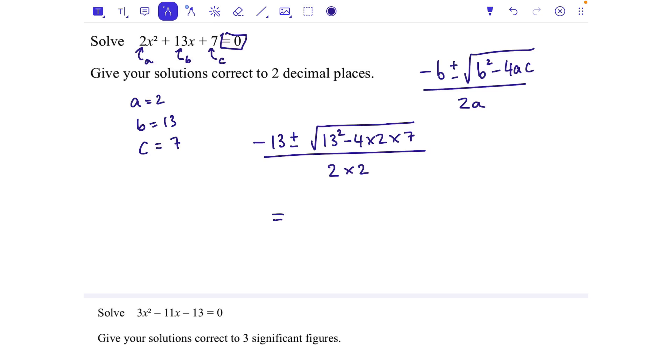Putting that in my calculator, I'm just going to use the fraction button first and then type minus 13 plus - I'm just going to use that plus the first time - and then the square root of 13 squared minus 4 times 2 times 7, all over 2 times 2. That gives me minus 0.59246. We need to give our solution correct to two decimal places, so there's the first decimal place, there's the second decimal place, check the next number and it rounds down, so minus 0.59 is my first solution.